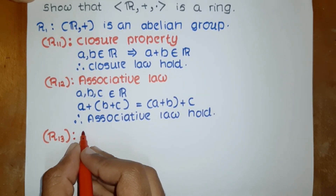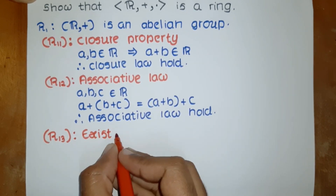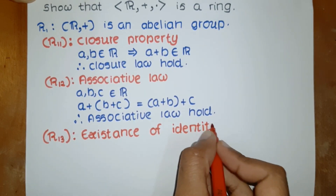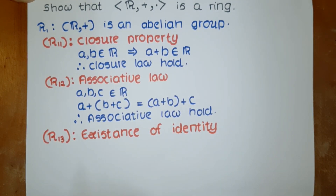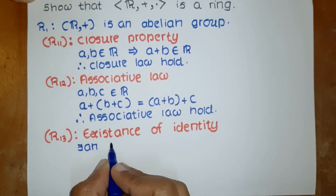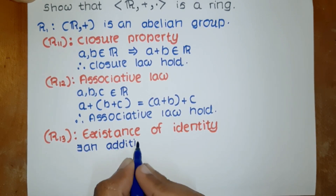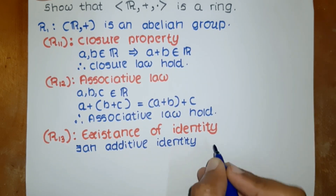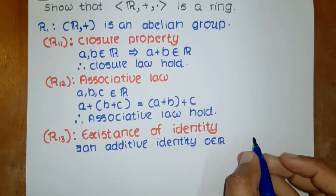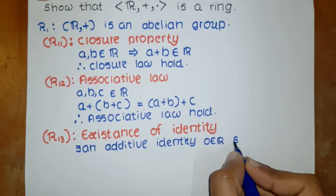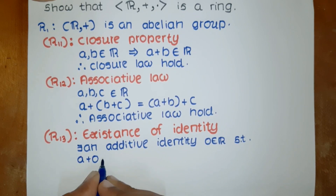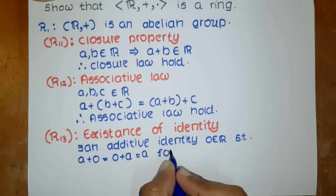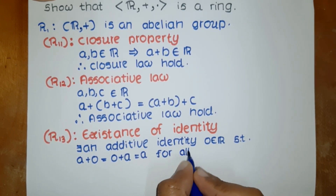The third axiom is the existence of identity. There exists an additive identity — the zero element of the real numbers — such that a plus zero equals zero plus a equals a, for all a in R.